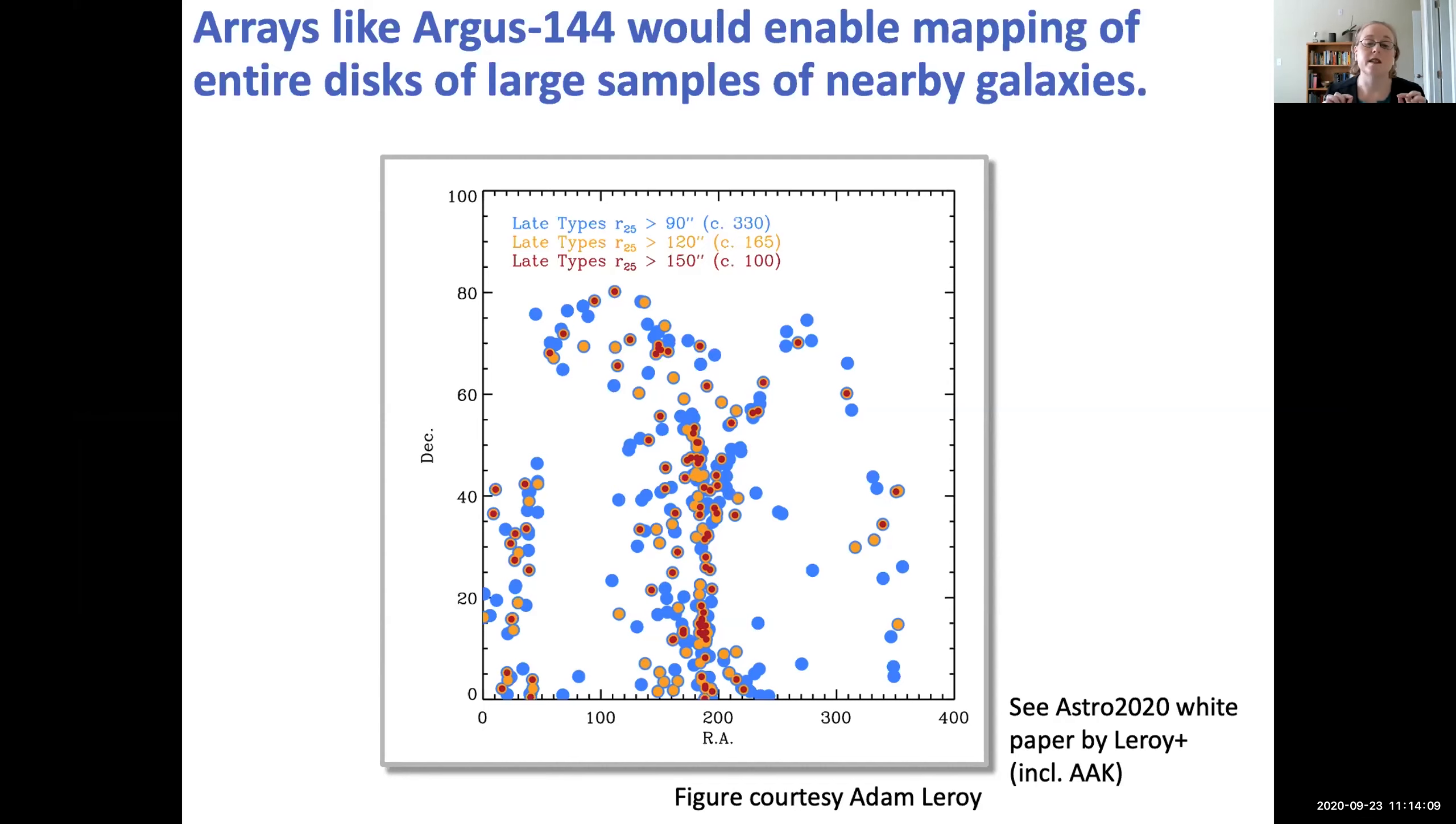We were talking yesterday about using the current Argus 144 design with the inner 16 pixels hooked up to the Vegas spectrometer. And I could see a mode where if you were doing local galaxies, not super local like local group, but local enough that those 16 pixels with a wider backend would be really powerful to get either a larger sample in lines like HCN or HCO+, or look at other lines like CS, which has been less explored. And so I think that's a really powerful tool.